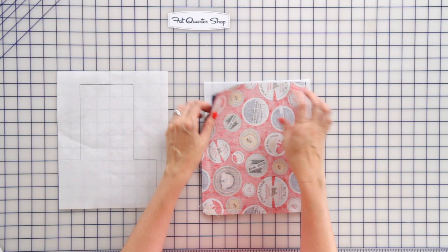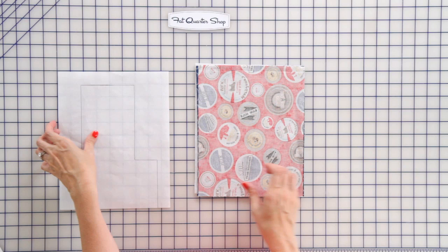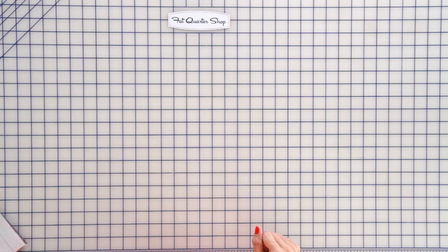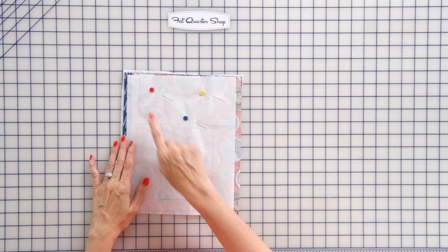You want to take your fabrics, put the two fabrics right sides together on top of the batting. Place your template on top.